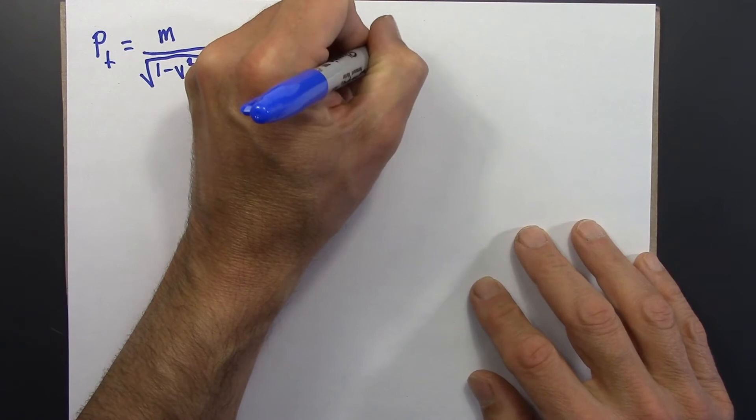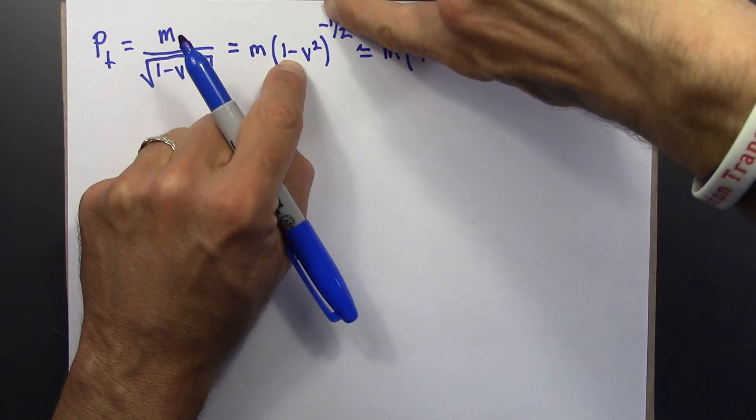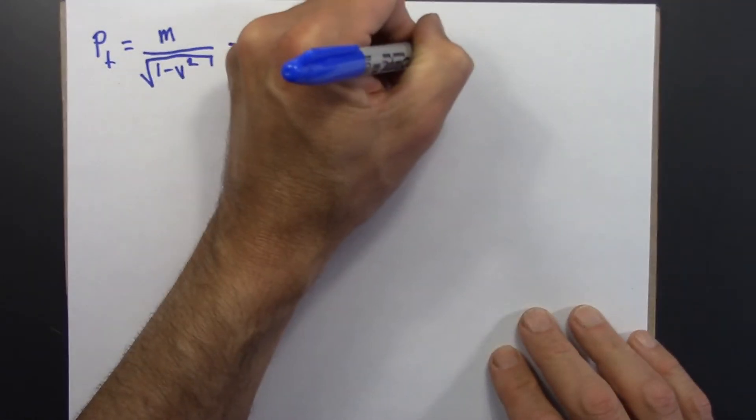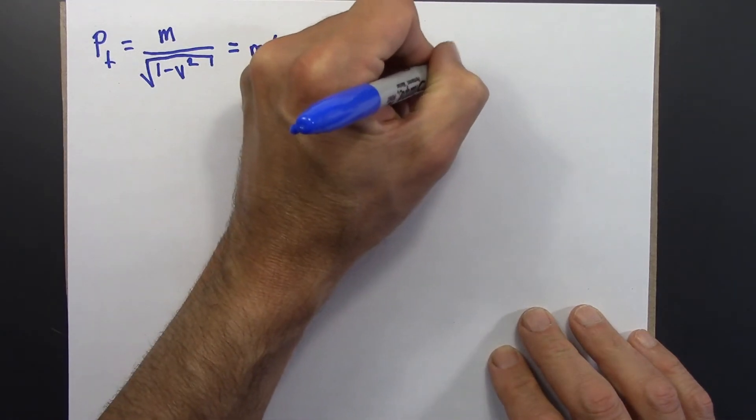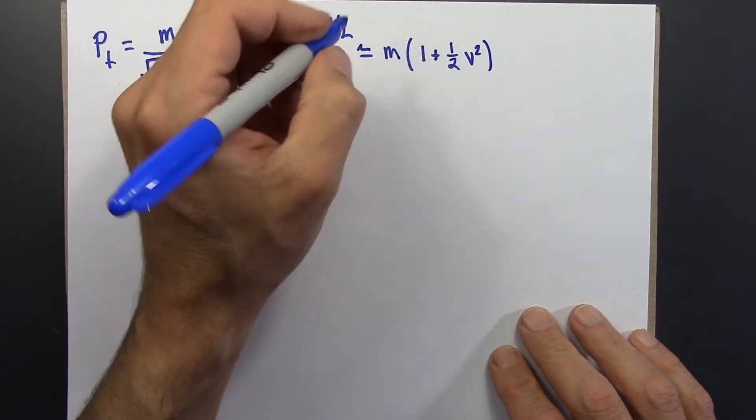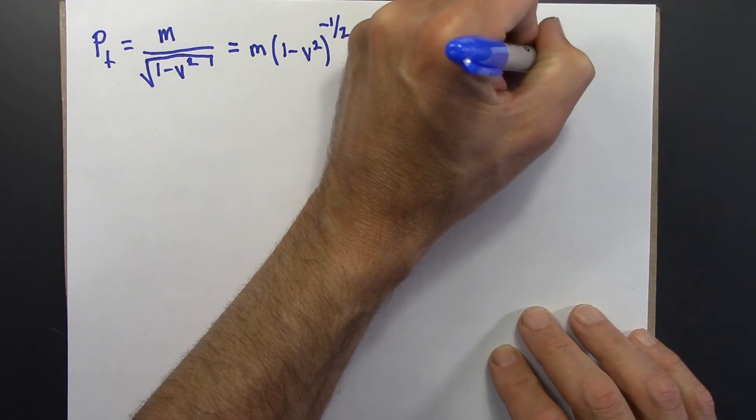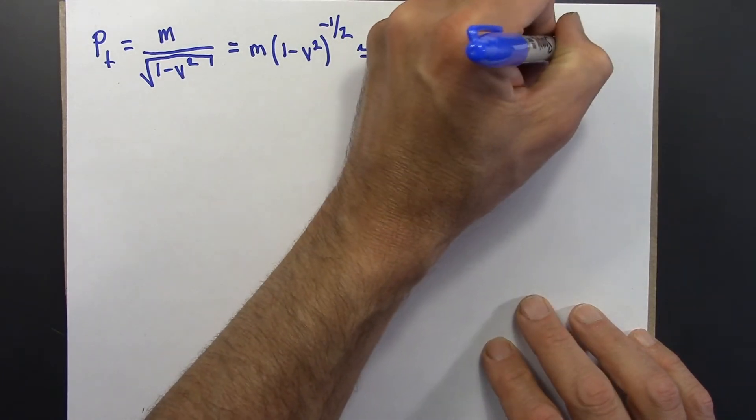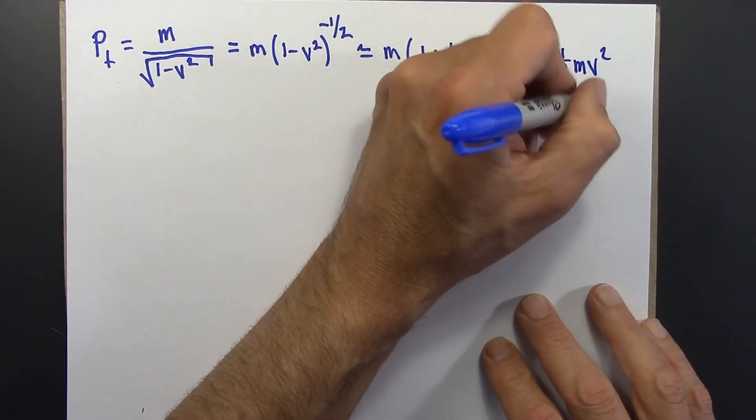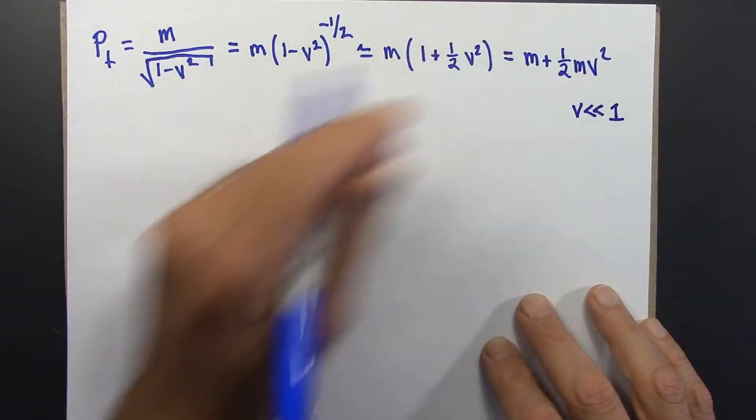So this is m. And this is going to be 1. There's a minus here and a minus there. Two minuses. That's going to make it a plus. So this is going to be 1 plus 1 half v squared. Or m plus 1 half mv squared. And as a reminder, this is true only if v is much less than 1.